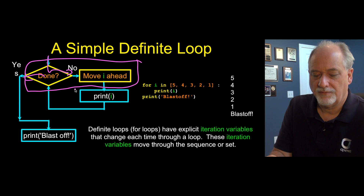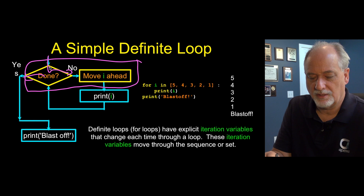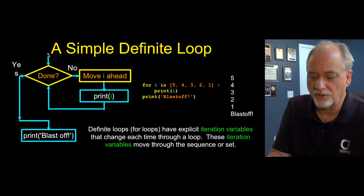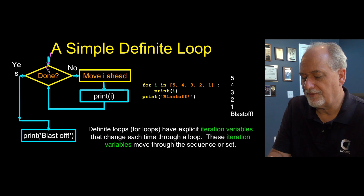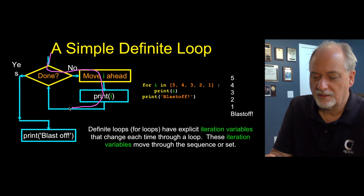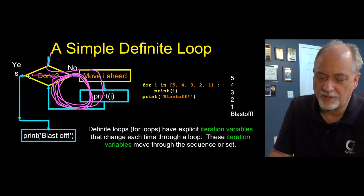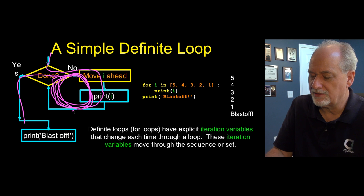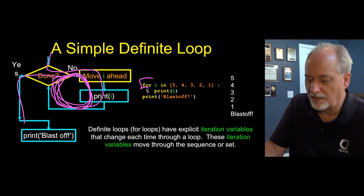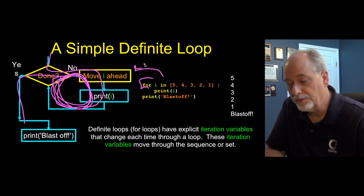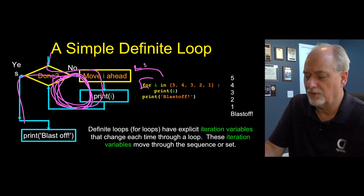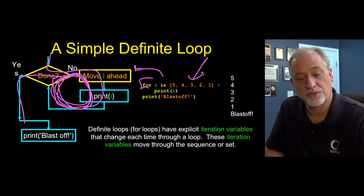By using a for loop: are we done? No, we have five things to work through. Set it to the first one, run it. We're not done — set it to the second, third, fourth, fifth one, and now we're done. That is all handled in a single line of code that includes the iteration variable and the set of things through which we are going to iterate.